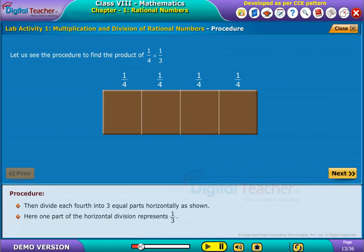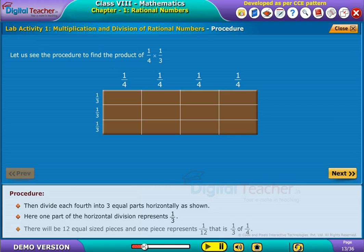Then divide each fourth into three equal parts horizontally as shown. Here one part of the horizontal division represents 1 by 3. There will be 12 equal sized pieces and one piece represents 1 by 12, that is 1 by 3 of 1 by 4.